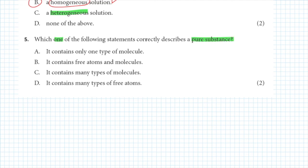Is it A) it contains only one type of molecule, B) it contains free atoms and molecules, C) it contains many types of molecules, or D) it contains many types of free atoms?